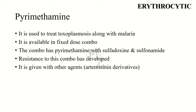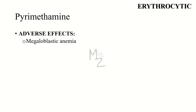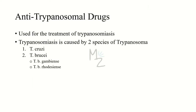Next up is pyrimethamine, a drug used to treat both toxoplasmosis and malaria. It is available in fixed-dose combination. The combination of pyrimethamine with sulfadoxine — a sulfonamide — can treat toxoplasma gondii infections. Resistance to this combination has developed, so it is given with other agents such as artemisinin derivatives. Mechanism of action: it inhibits plasmodial dihydrofolate reductase, which is required for the synthesis of tetrahydrofolate, a cofactor needed for nucleic acid synthesis. It acts as a blood schizonticide and a strong sporonticide. Adverse effects include megaloblastic anemia.